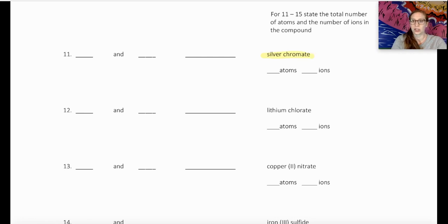In the case of number 11, we've got silver chromate, and we're going to find those individual ions, their charges, and then count up what we need to get a neutral compound, write its formula, and then the last thing we'll do is count up the total number of ions and atoms.